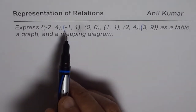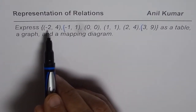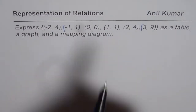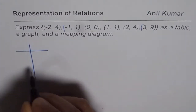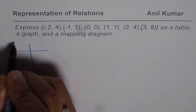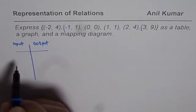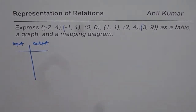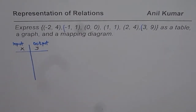A relation is a relation between two sets of elements — one is the input and the other one is the output. To make a table, we create two columns: one column for input and the other for output. Input is represented by the independent variable x, and output is represented by the dependent variable y.